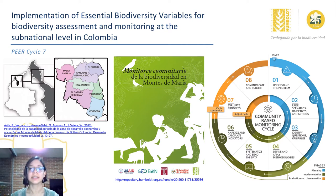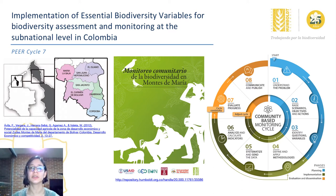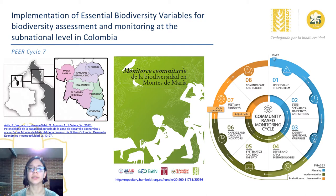Following an eight-step cycle, we implemented a community-based biodiversity monitoring with three peasant associations. This is a methodology where community members participate in every step of the process. We wrote a short book that summarizes the results obtained on each step, from the understanding of the problem to the definition of the monitoring methodologies. The book is available at the link shown here.